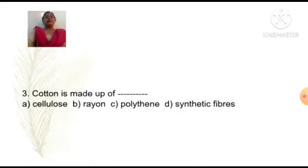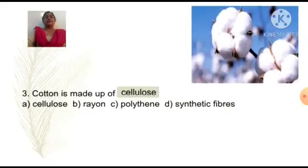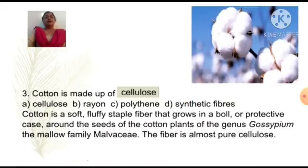Cotton is made up of: Option A cellulose, Option B rayon, Option C polythene, and Option D synthetic fibers. Answer is Option A cellulose. Cotton is a soft fluffy staple fiber that grows in a ball or protective case around the seeds of the cotton plants of the genus Gossypium, the mallow family Malvaceae. The fiber is almost pure cellulose.